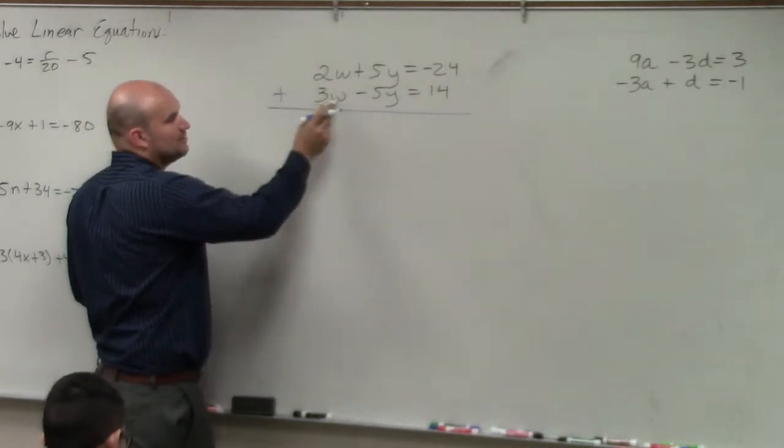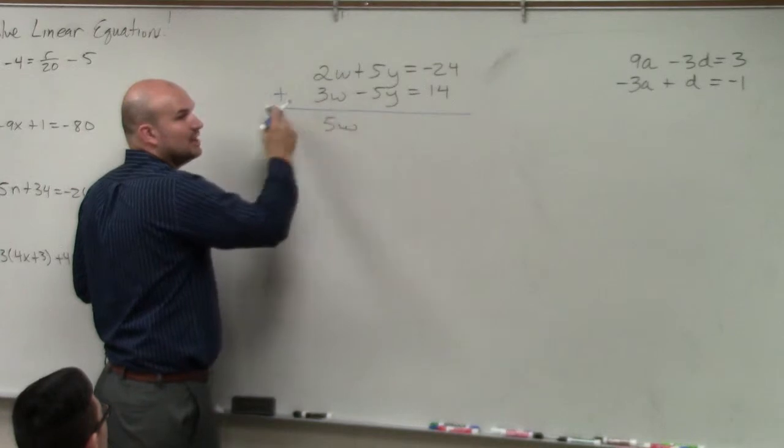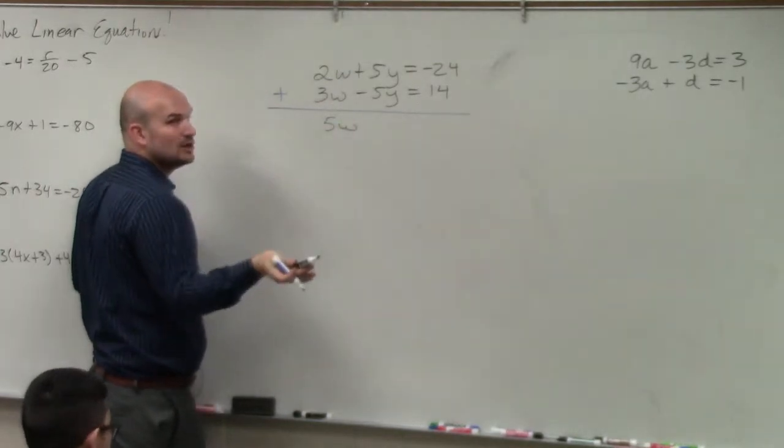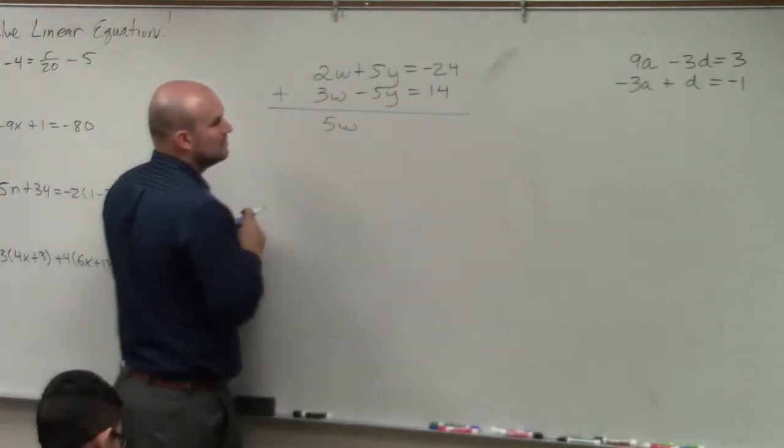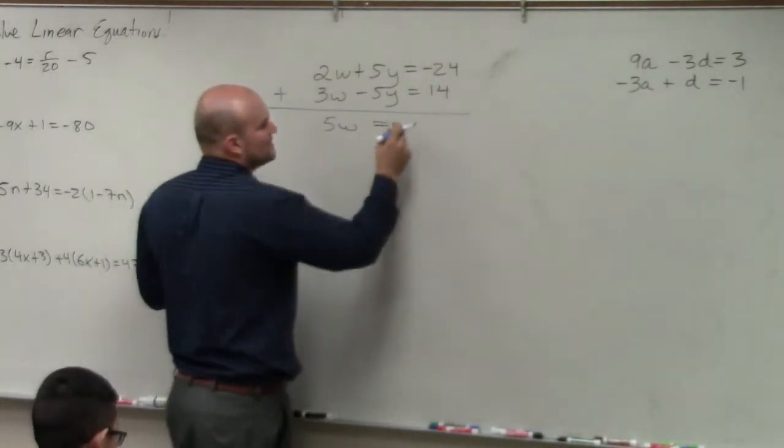2w, or 2w plus 3w is 5w. 5y plus negative 5y is 0y, which is just 0, equals negative 24 plus 14 is 10.